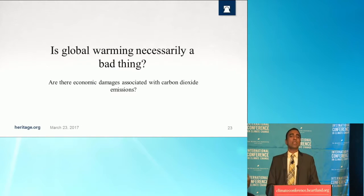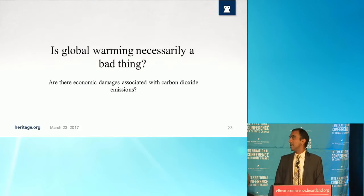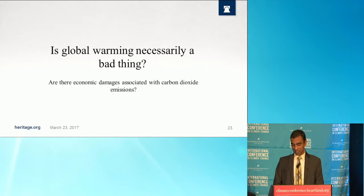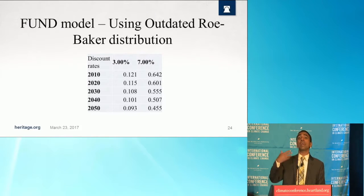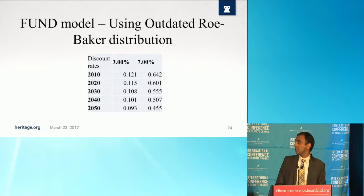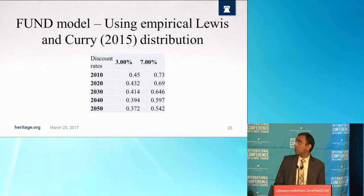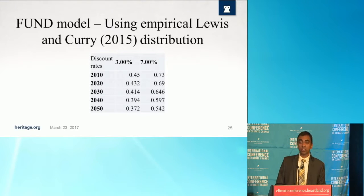Is global warming necessarily a bad thing? Are there actually damages associated with carbon dioxide emissions? According to the FUN model, the answer is no. We computed the probability of a negative SCC, which would suggest actual benefits of carbon dioxide emissions. Under the outdated Roe-Baker distribution at a 3% discount rate, there is slightly above a 10% chance of the SCC being negative, going up to 60% under a 7% discount rate. Using the more up-to-date Lewis and Curry distribution, these probabilities increase substantially — nearly 70% under a 7% discount rate for the year 2020.